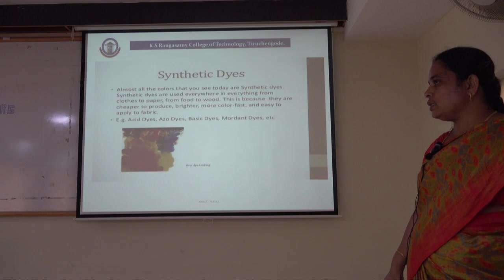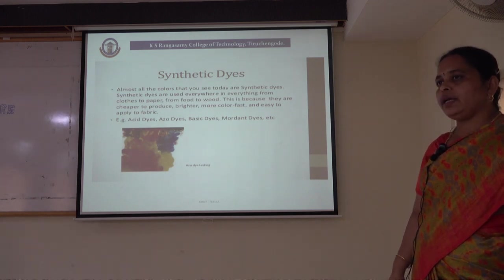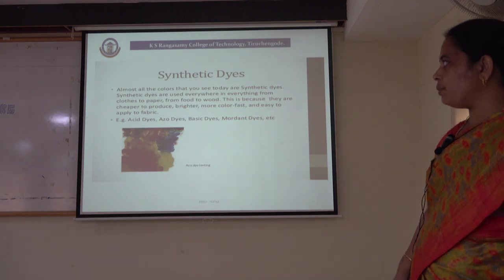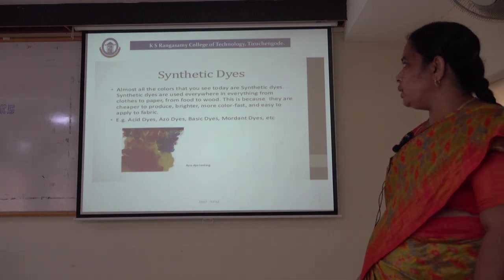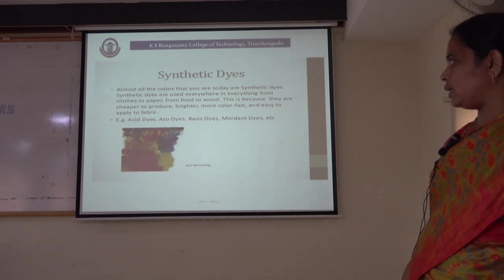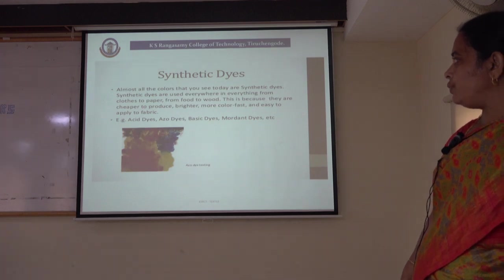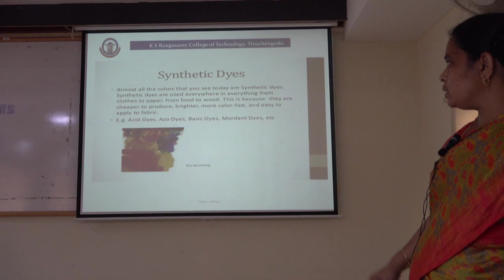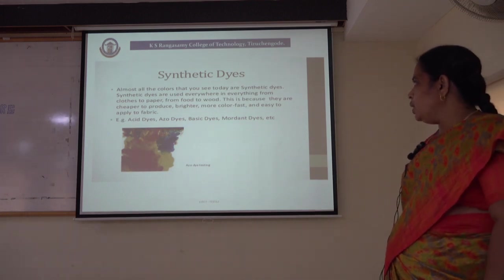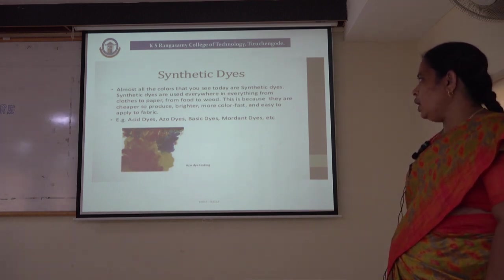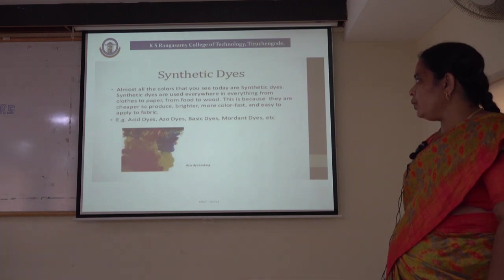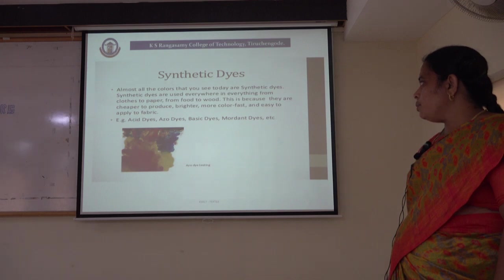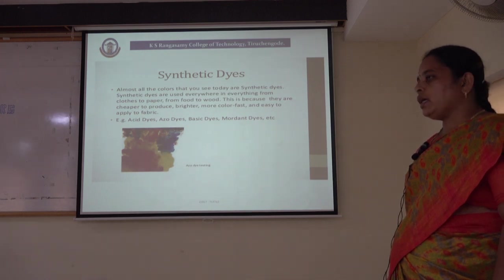Coming next to synthetic dyes — the name itself indicates that it is a man-made dye. Almost all the colors that you see today are synthetic dyes. Synthetic dyes are used everywhere, in everything from clothes to paper, from food to wood. This is because they are cheaper to produce, brighter, more color-fast and easy to apply to fabric. A few examples for synthetic dyes are acid dyes, vat dyes, basic dyes, mordant dyes, etc.